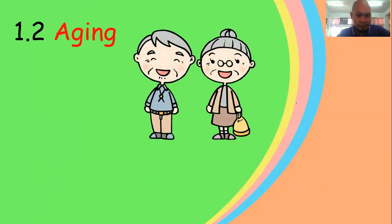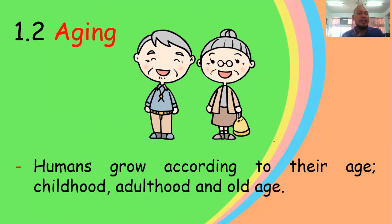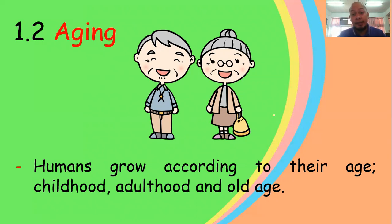The second cycle is aging. Humans grow according to their age: childhood — from birth up to the teenage years; adulthood — after our teenage years up to when we are married; and old age — those are the people we call grandfather and grandmother.